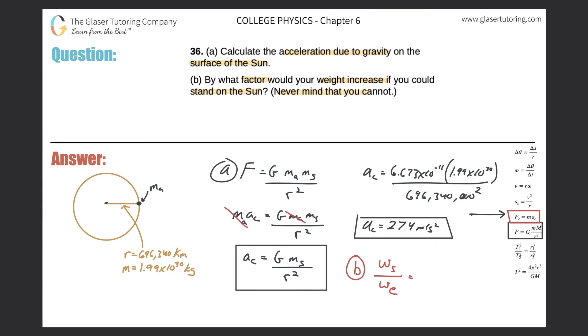Now, when I do that, remember, weight is equal to mg. So, this would mean that it's equal to the mass, our mass, multiplied by the acceleration due to gravity on the sun. And we just found that. Divided by our mass, multiplied by the acceleration due to gravity on earth. So, look what happens. Masses cancel.